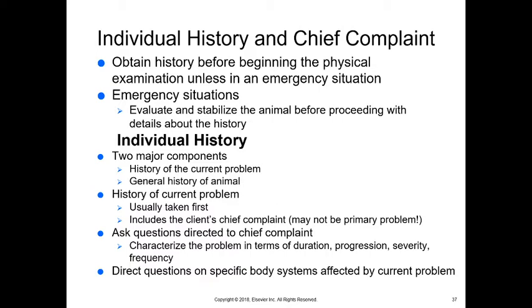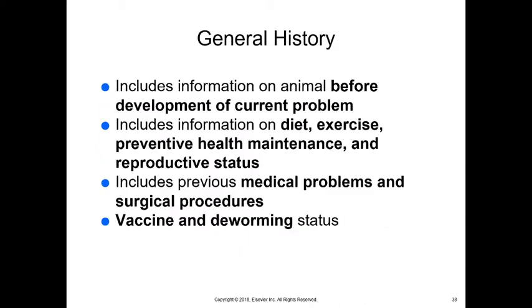We're going to look at individual history and the chief complaint, and we're going to get that before you begin the physical examination unless you have an emergency situation. If you do have an emergency, you want to evaluate and stabilize the animal before proceeding with details about the history. There are two major components for individual history: the history of the current problem and the general history of the animal. The history of the current problem includes the chief complaint, which may not be the primary problem. Ask questions to characterize the problem in terms of duration, progression, severity, and frequency.